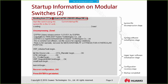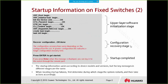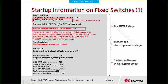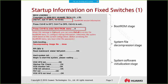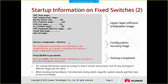There are basically three stages. First is the boot ROM stage — the boot ROM is running and we can press Ctrl+B to enter the boot ROM menu. Next is the system file stage — the system will run the system file read from the CF card or flash. After the system file is running, it will recover the configuration. When configuration recovery is finished, we can get started.